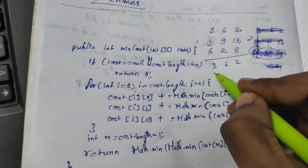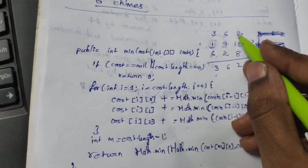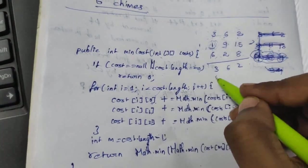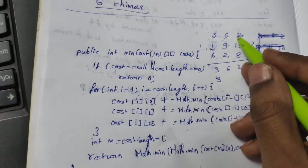Second row we are going to change: 1 plus minimum of 6 or 2. Minimum is 2, 1 plus 2 is 3. And then 9 plus minimum of 3 or 2.